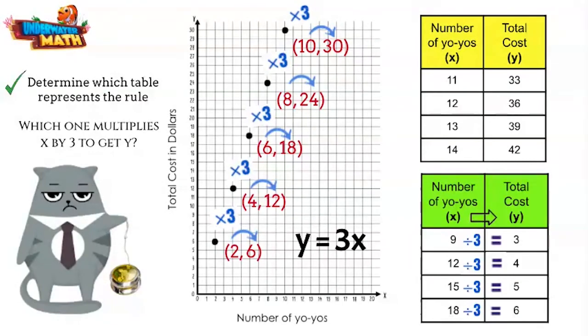You're right. Let's check the yellow table. Each of these numbers can be multiplied by 3 to get to the corresponding y. That matches our rule. Yes, it does. This is the correct table.